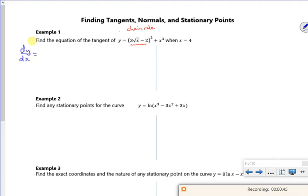It's a little bit more messy because that's 3x to the power of half minus 2. So if I differentiate that bit, that becomes 3 over 2 x to the power minus a half. So that's the bit inside the bracket.